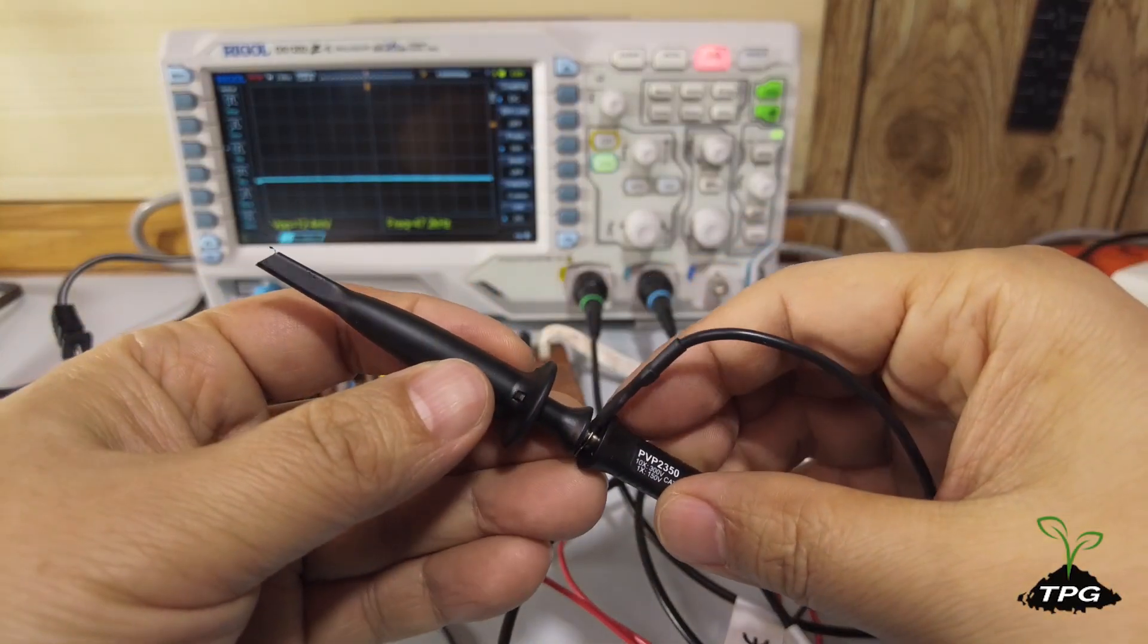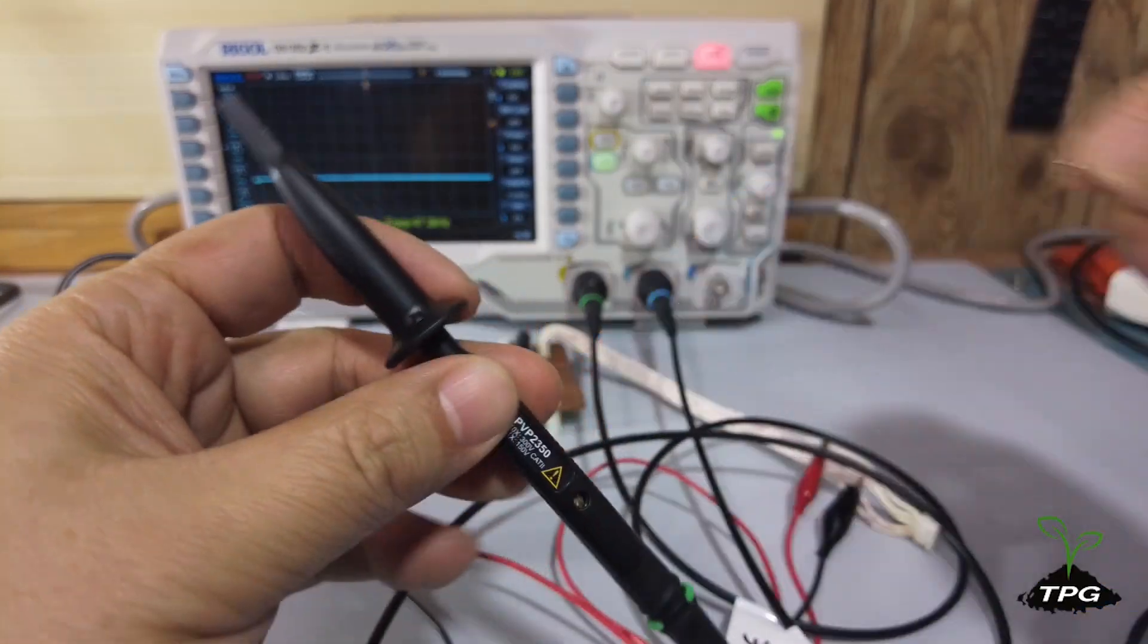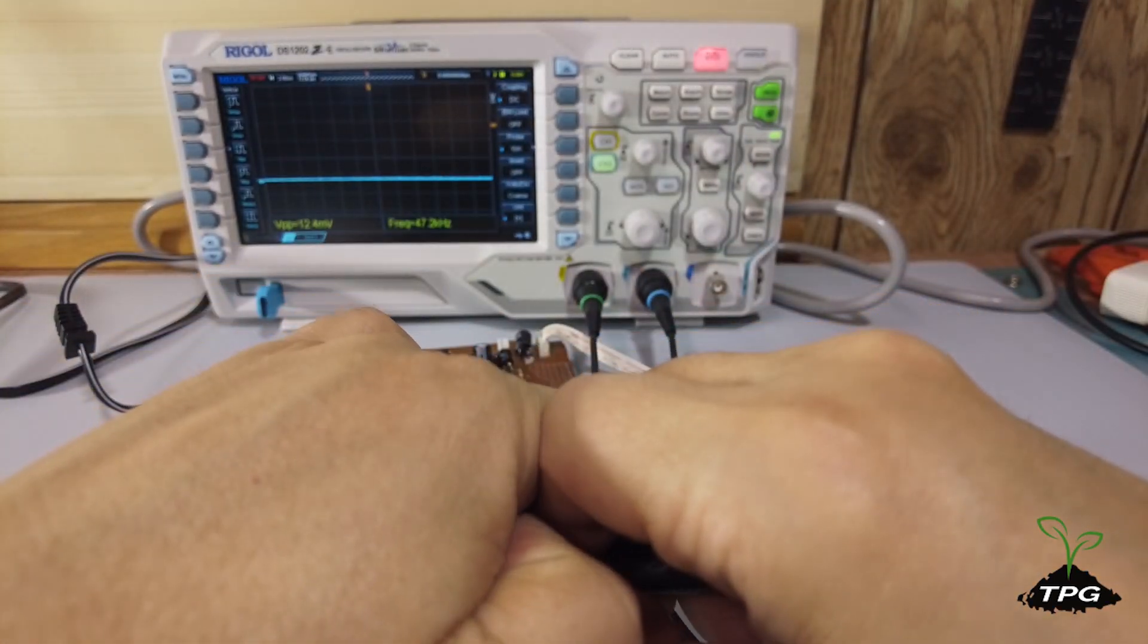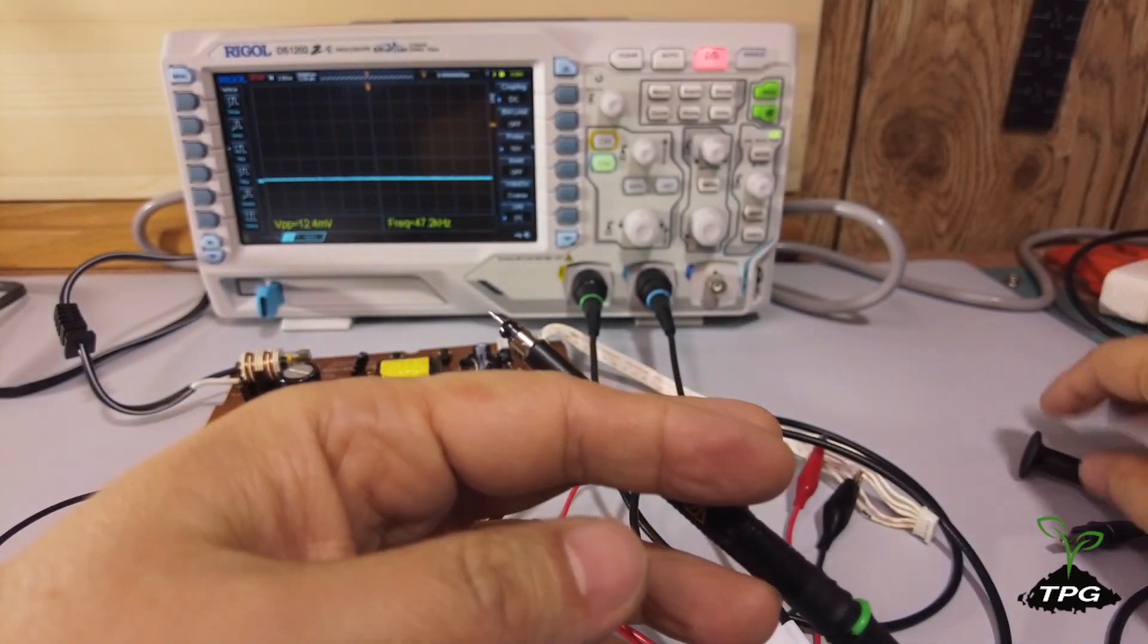In this measurement, the retractable hook tip and ground alligator clip are removed, and the ground spring is used to minimize the chances of ground loops. This helps reduce noise in the measurement.